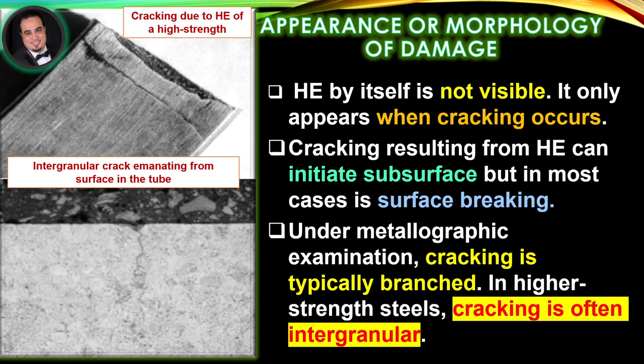Appearance or Morphology of Damage: Hydrogen embrittlement by itself is not visible — it only appears when cracking occurs. Cracking resulting from hydrogen embrittlement can initiate subsurface, but in most cases is surface breaking. Under metallographic examination, cracking is typically branched. In higher-strength steels, cracking is often intergranular, as illustrated in figures showing cracking due to hydrogen embrittlement of a high-strength steel tube and an intergranular crack emanating from the surface of the tube.